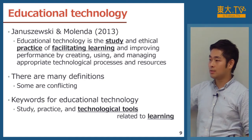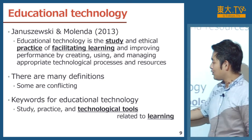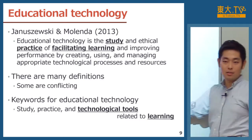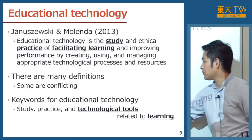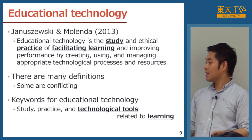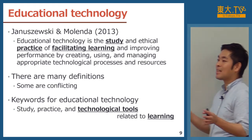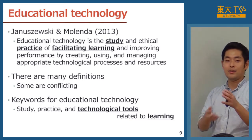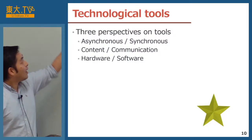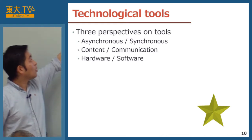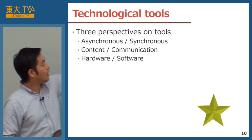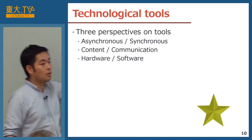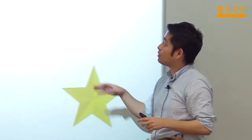Keywords for educational technology are: study — which means research — and practice, and also technological tools. If you don't know about the tools you cannot use them. I would like to introduce some perspectives on technological tools. There are thousands and thousands of tools, so we need some perspective to organize educational technology. I will show three perspectives on tools.